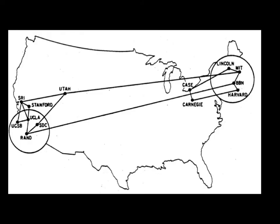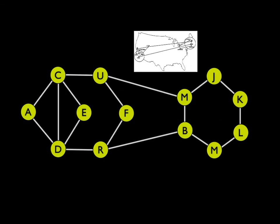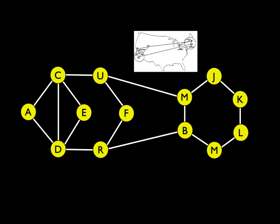The first thing we do is take a picture like this, and in order to simplify our analysis, we create an abstract model. This is a physical model characterizing the geographic nature of the universities and research labs that are connected. But what we're going to do is draw a more abstract version of this. In this picture, U connects to Utah, there's the RAND Corporation, MIT, and BBN — a one-to-one correspondence between the original graph and the abstract graph.